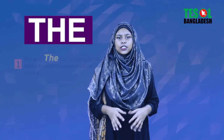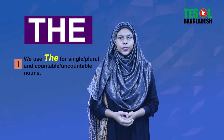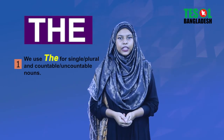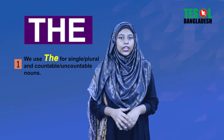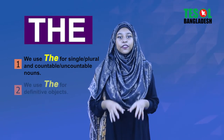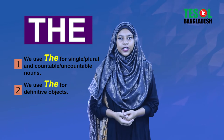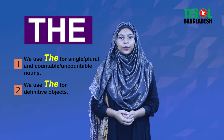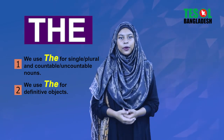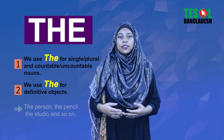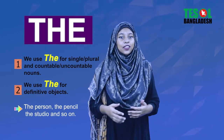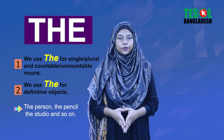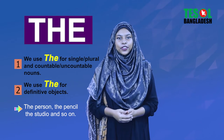Our third article is the. Aamra the je kuno dharane shabde jino baabhar kortte paari — single, plural, countable or uncountable. But we use the for definitive objects. Aamra kuno nidhisht shabde kotha bulle, da baabhar kore kotha bulle. Jamon, the person, the pencil, the studio and so on and so forth.